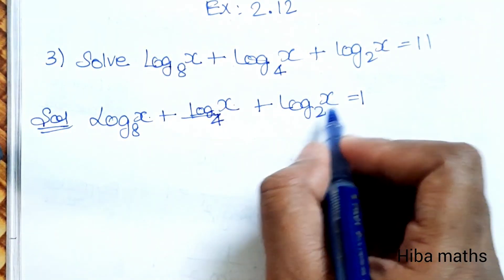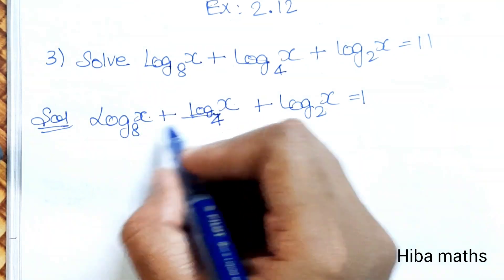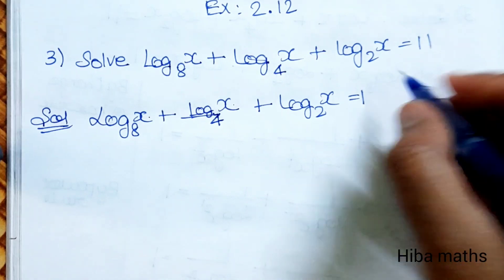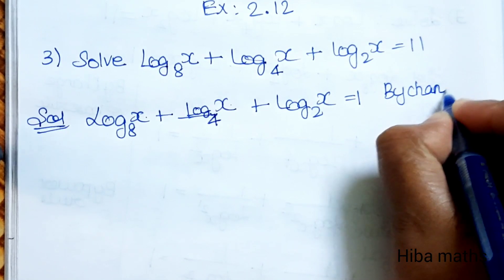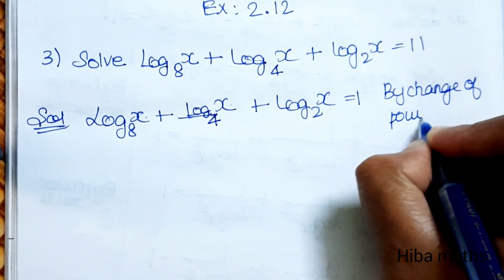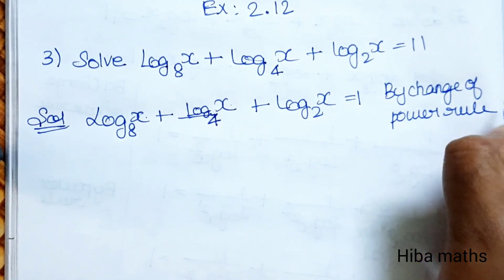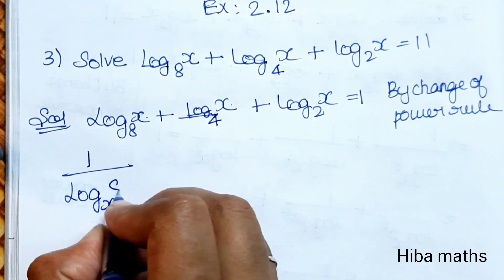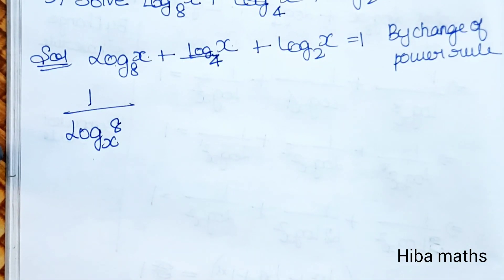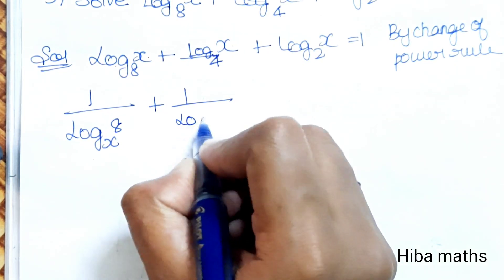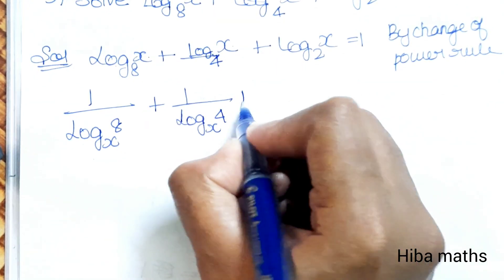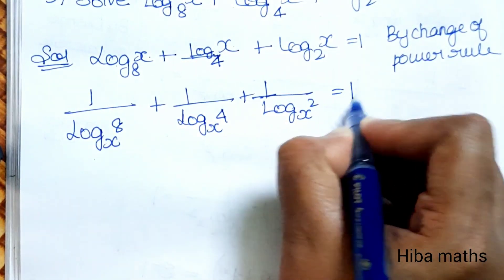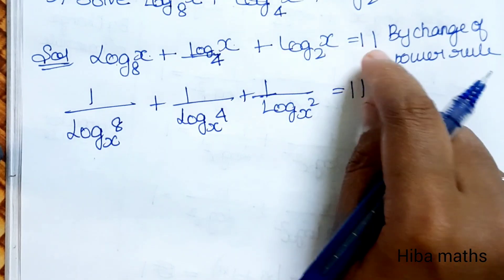We will apply the change of base rule. By change of base rule, log base 8(x), log base 4(x), log base 2(x) can be rewritten. Using the rule, 1 divided by log base x of 8, plus 1 divided by log base x of 4, plus 1 divided by log base x of 2, is equal to 11.